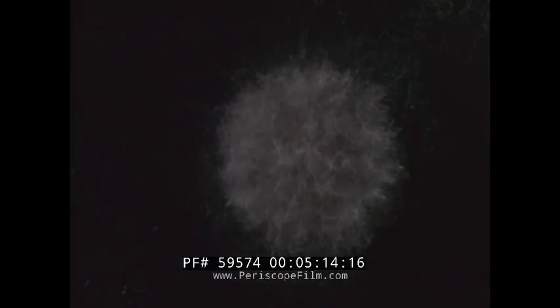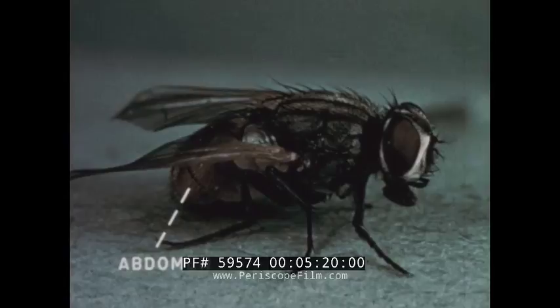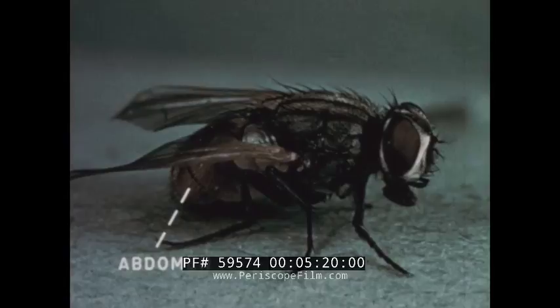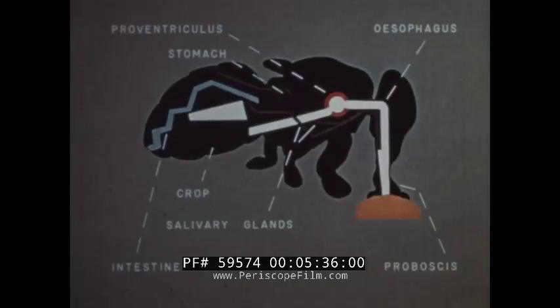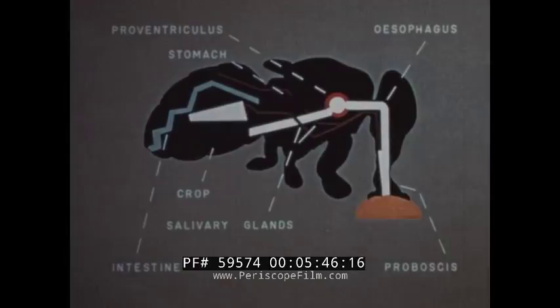The housefly's respiratory and digestive systems extend through the thorax and the abdomen. The abdomen also encloses the reproductive system. Breathing is accomplished through holes or pores called spiracles in the body wall. The feeding and digestive systems of the fly add still another manner in which the fly spreads disease. Here we have an animated diagram to give us an idea of how the digestive system functions. When necessary, the fly pumps saliva from its salivary glands onto its food to help soften it.